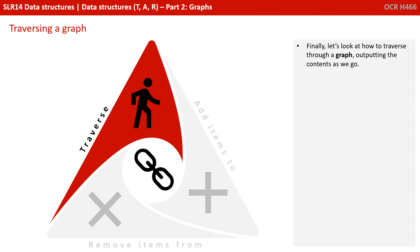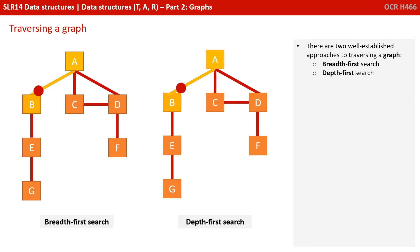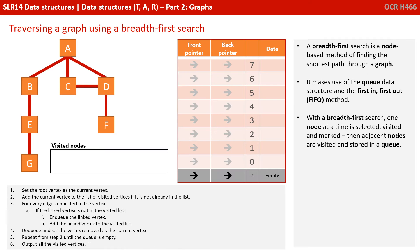So finally, let's look at how to traverse through a graph, outputting the contents as we go. There are two well-established approaches to traversing a graph: a breadth-first search and a depth-first search. A breadth-first search is a node-based method of finding the shortest path through a graph. It makes use of the queue data structure and the first-in-first-out method. With a breadth-first search, one node at a time is selected, visited and marked, and then adjacent nodes are visited and stored in a queue.